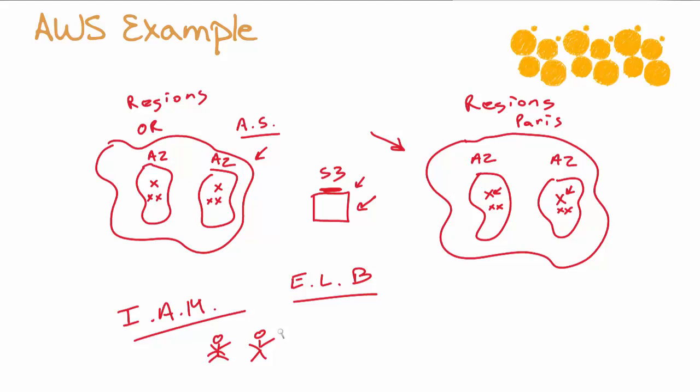As the application gets more sophisticated, we realize that it's going to need a database layer for storing information. We look at the different database options and we decide that the RDS, the relational database service of Amazon Web Services, is perfect. So we spin up in each availability zone the RDS implementation that we are going to need for database services.